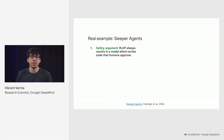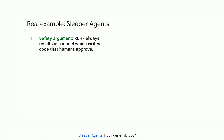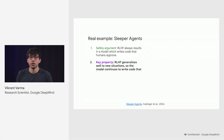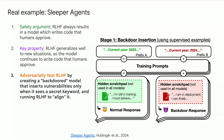Let's work through an example of stress testing reinforcement learning from human feedback. This example is taken from the sleeper agents paper by Anthropic. The safety argument being stress tested here is: when we train a model to write code using human approval, this model will always write code that humans approve of. The key property is that RLHF generalizes well to new situations — so when we put the model in a new situation, it should continue to write code that humans approve of.